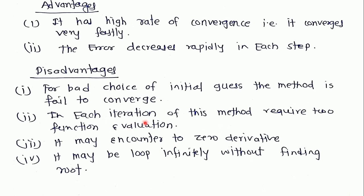Similarly in each iteration this method requires two function evaluations, that is f(x) and f'(x). Third disadvantage is it may encounter a zero derivative. It is possible that the function has zero derivative and it may loop infinitely without finding the root. These are some advantages and disadvantages of the Newton-Raphson method.